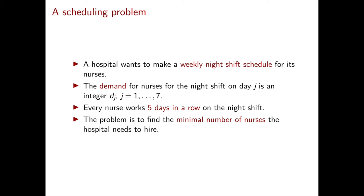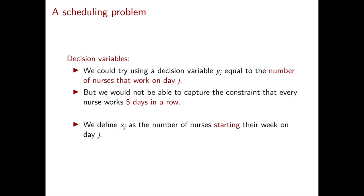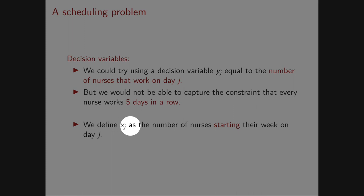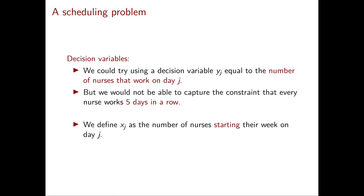As always the first thing to do is to decide the decision variables. The most intuitive approach — having x_1 through x_7 represent how many nurses work each day — makes it very difficult to write the five-consecutive-days constraint. Instead we define x_j as the number of nurses that start their week on day j. Those nurses will be working on day j, j+1, j+2, j+3, and j+4, all modulo 7.